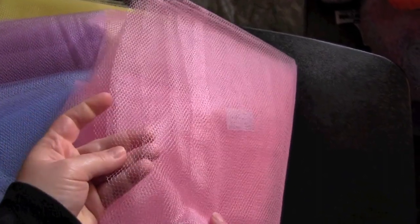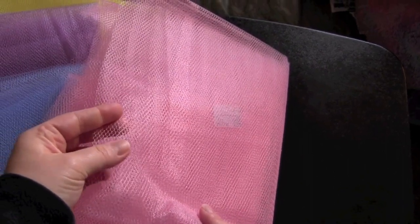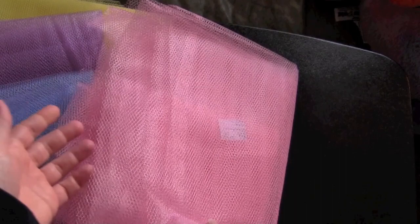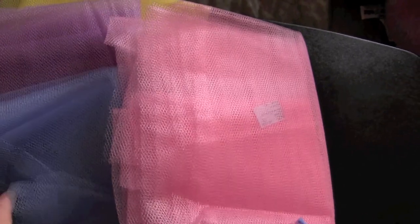The difference between the two is the holes in this nylon mesh are a little bit bigger than what you'll find with the tulle. I got mine at fabric.com. You can get this at Joann's, and they actually have something called scrubby mesh.